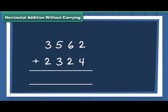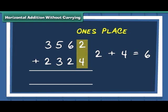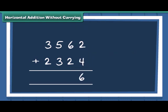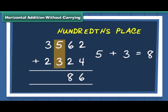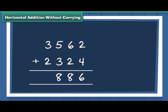We have the 2 numbers 3562 and 2324. Now we first add numbers at 1's place. Next, we move to numbers at 10's place. Then add the numbers at 100's place and finally the numbers at 1000's place are added. Thus, sum of 3562 and 2324 is 5886.